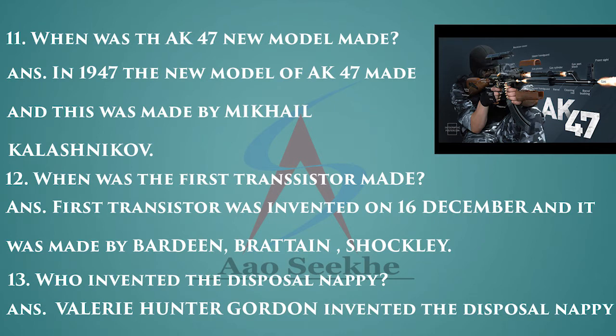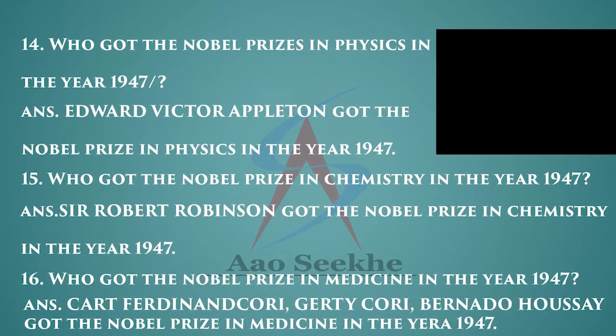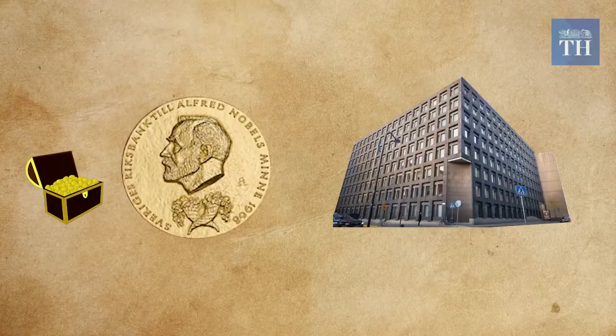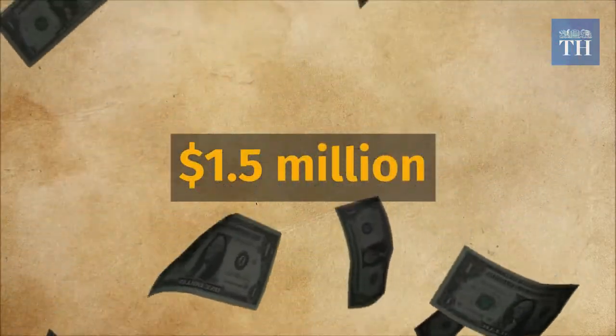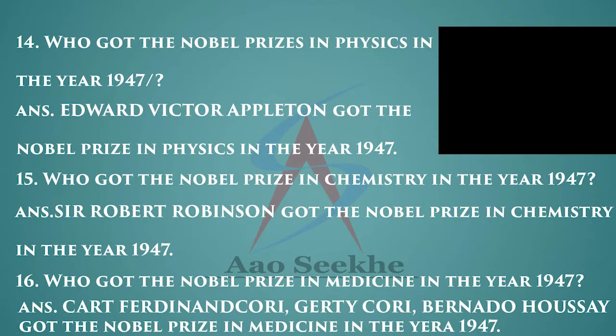Fourteenth: who got the Nobel Prize in Physics in the year 1947? Edward Victor Appleton got the Nobel Prize in Physics in 1947. Fifteenth: who got the Nobel Prize in Chemistry in the year 1947? Sir Robert Robinson got the Nobel Prize in Chemistry in 1947.